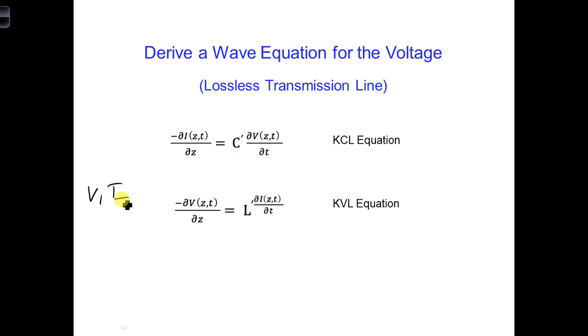For the moment, let's choose to solve for voltage. Assume the transmission line is lossless. Spend a couple minutes combining the two telegrapher's equations shown here, in such a way that you have one equation, and voltage is the only unknown. So get rid of any current terms.